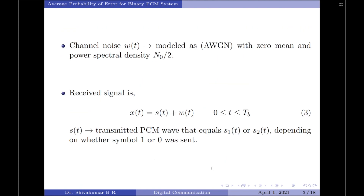Moving on, let us consider the channel noise W of T to be modeled as additive white Gaussian noise, simply AWGN, with zero mean and a power spectral density of N0 by 2. Correspondingly, the received signal equals X of T equals the signal part S of T plus the noise part W of T, where S of T is the transmitted PCM wave — either S1 of T or S2 of T — depending on whether symbol 1 or symbol 0 was sent.